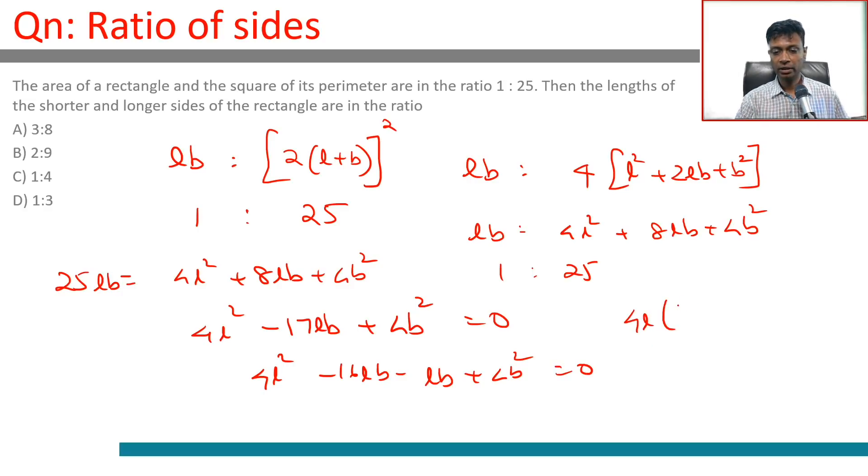4L into 4L minus 4B, minus B. So, 4L minus B into L minus 4B is 0.